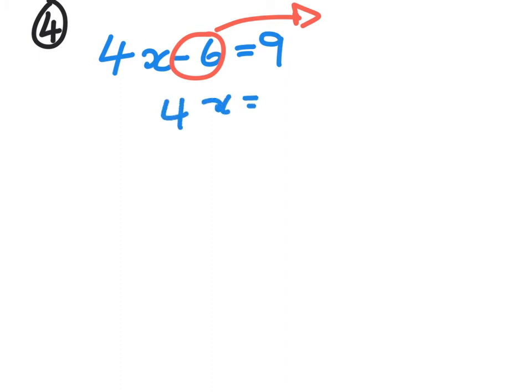Question four: we've done one of these in the last few homeworks. 4x take away 6 equals 9. First thing we're going to do is get that negative 6 over to the other side, which is going to give us 4x equals, and then x equals. Now this time your answer is going to be a fraction, so write it as a fraction.